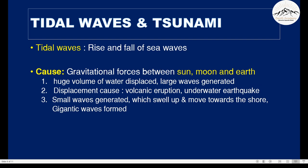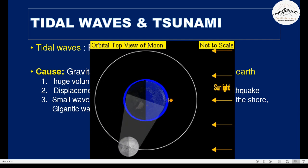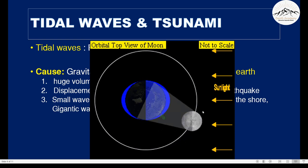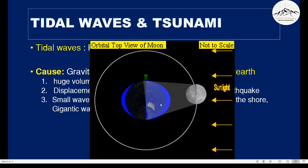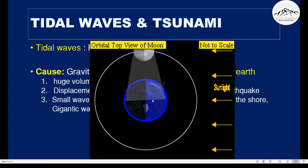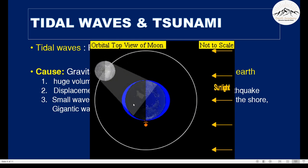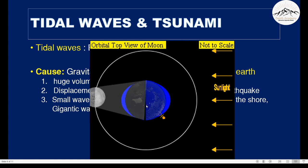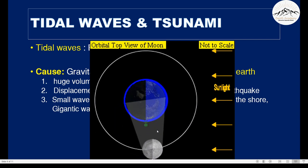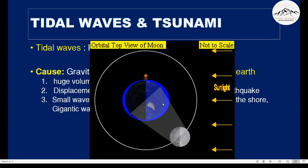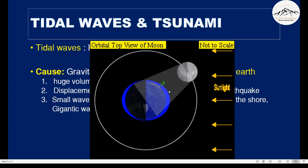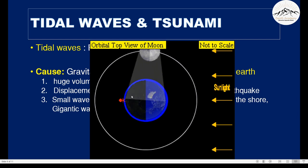Let's see how that happens. When the moon is getting aligned with the earth and the sun, it creates a gravitational force which pulls the waves towards itself. When it's not aligned, it causes a low tide. When it is aligned, the gravitational forces are so strong that it causes a high tide — very high waves.